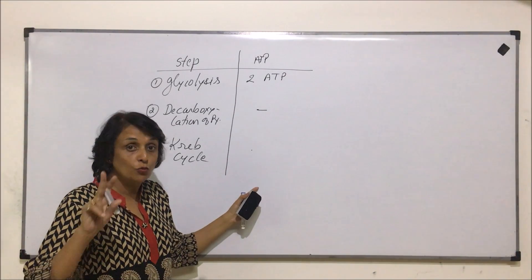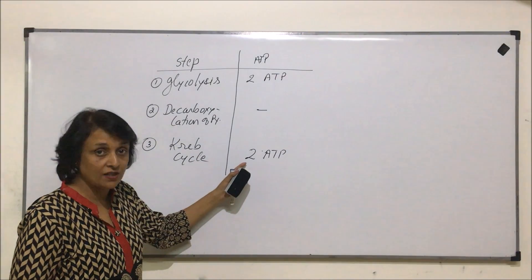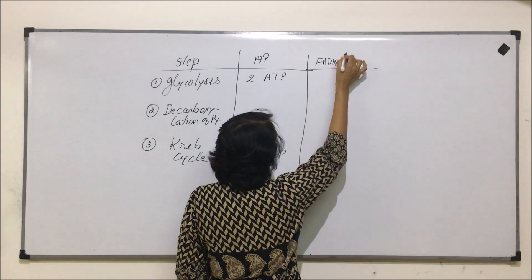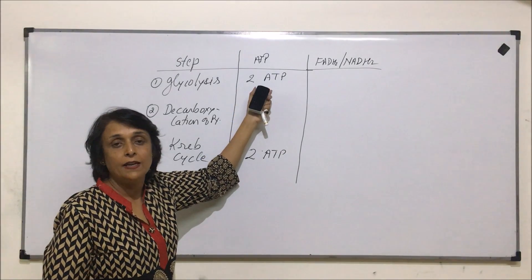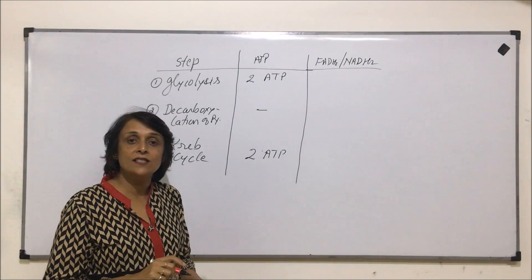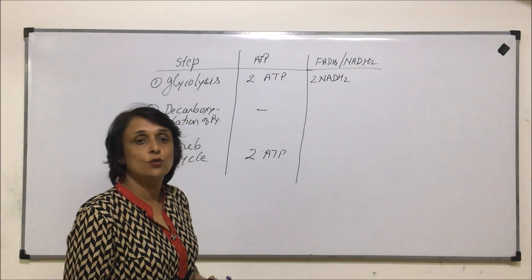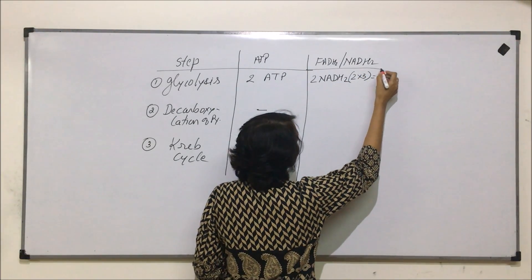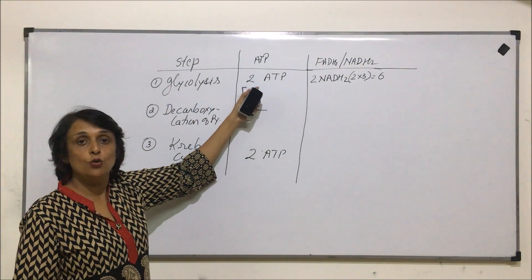Glucose gives us two pyruvic acids, and two pyruvic acids will have to go through two Krebs cycles, so in Krebs cycle we will get two ATPs — one in each Krebs cycle. In glycolysis, when glycerate 3-phosphate undergoes reactions, one NADH is synthesized, and this reaction takes place twice, so we get two NADH. One NADH is equivalent to three ATPs, so two NADH gives us six ATPs.